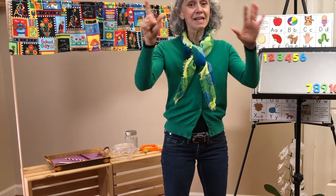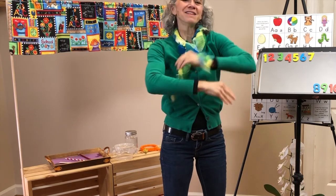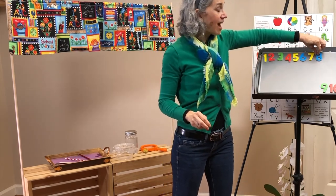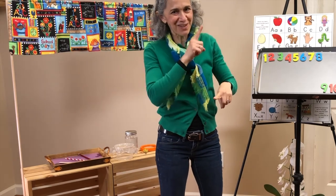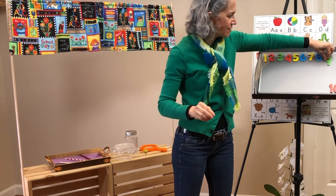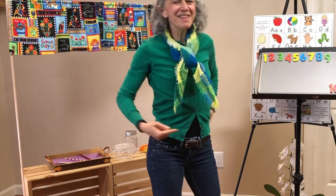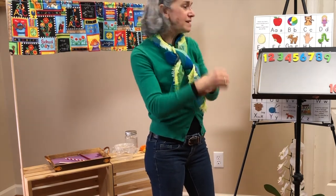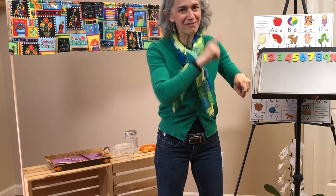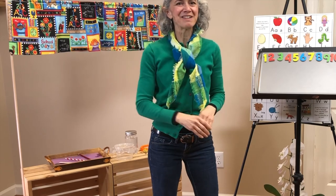This old man, he played seven. He played knick-knack up in heaven. With a knick-knack, paddy-whack, give a dog a bone. This old man came rolling home. This old man, he played eight. He played knick-knack on a gate. With a knick-knack, paddy-whack, give a dog a bone. This old man came rolling home. This old man, he played nine. He played knick-knack on his spine. With a knick-knack, paddy-whack, give a dog a bone. This old man came rolling home. This old man, he played ten. He played knick-knack once again. With a knick-knack, paddy-whack, give a dog a bone. This old man came rolling home. Well, that's all for today, boys and girls. Have fun, and I'll see you next time. God bless.